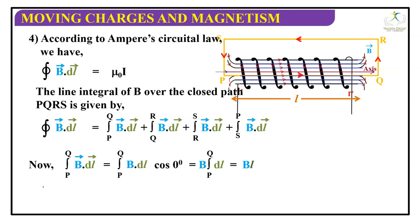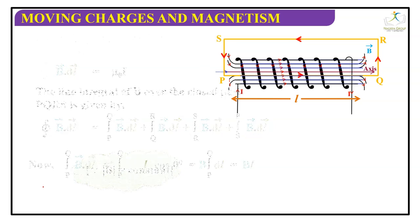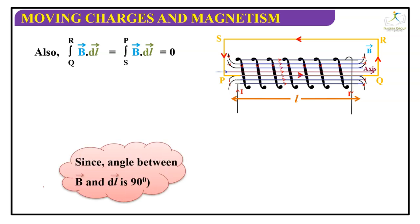For P to Q, the angle will be 0 because the direction of the magnetic field lines and the direction of the current are the same, and B is constant over there. For segments R to S and Q to R, the direction of current is perpendicular to the direction of magnetic field, so both of these will be 0.